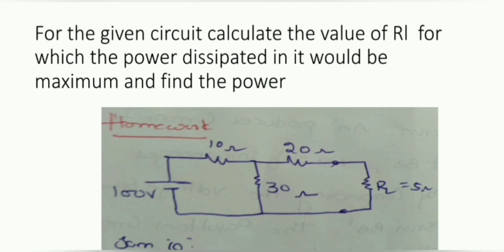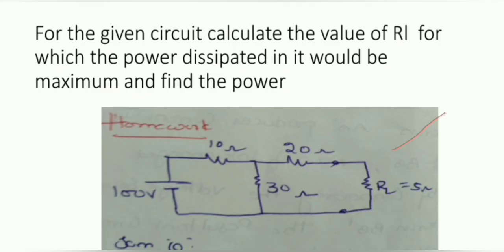Similarly, for the given circuit, calculate the value of RL for which the power dissipated would be maximum and find the maximum power. Here 100 ohms is given; this total circuit will also be converted into V_Thevenin in series with R_Thevenin in series with RL. After finding V_Thevenin, substitute V_Thevenin² divided by 4RL to find maximum power. This is a homework problem.